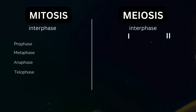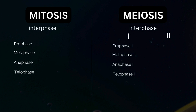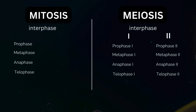The process of meiosis is highly orchestrated and consists of several distinct stages: Prophase 1, Metaphase 1, Anaphase 1, Telophase 1, Cytokinesis 1, followed by Prophase 2, Metaphase 2, Anaphase 2, Telophase 2, and Cytokinesis 2. Each stage plays a specific role in ensuring the proper segregation of genetic material and the generation of genetically unique gametes.